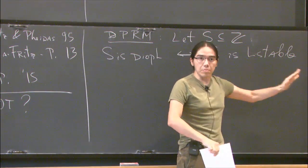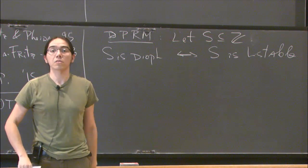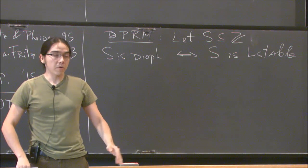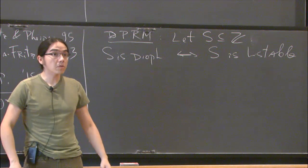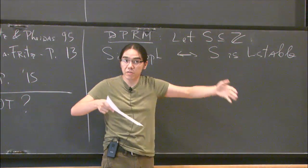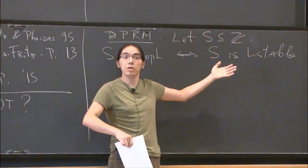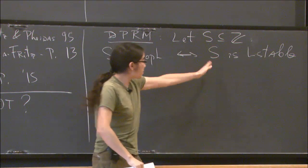Listable means there is some computer program that's going to print for you the elements of this set, no particular ordering and possibly with many repetitions. And of course, this implication is clear, because you take the Diophantine equation and you just do brute force until you get zero on the other side of the equation and list the elements. It's the converse that's non-trivial.